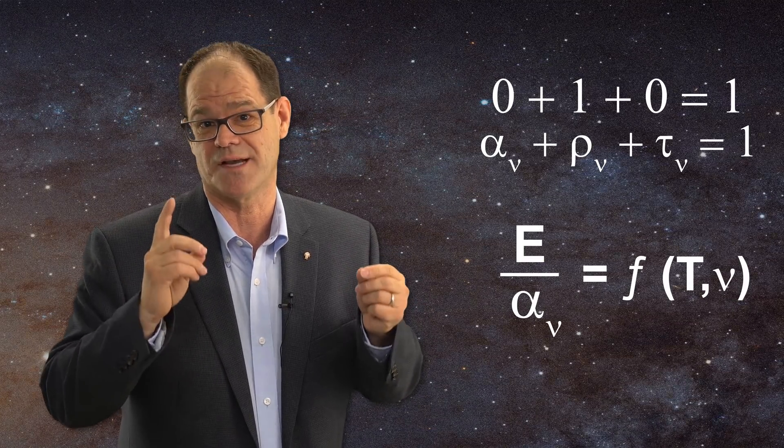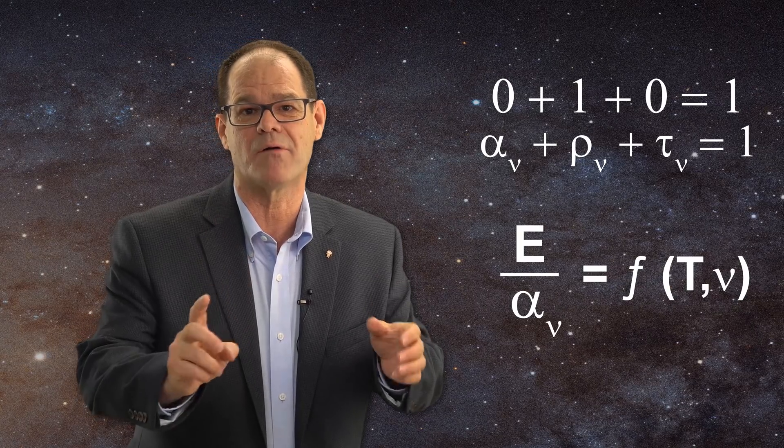We can still be in thermal equilibrium because the walls are at a single temperature. In this case, Kirchhoff's law becomes emissive power divided by zero is equal to some function of temperature and frequency, and the law explodes. This is because by definition, division by zero is always undefined. It does not matter if the emissive power is zero also, because in that case, the function will still be undefined.